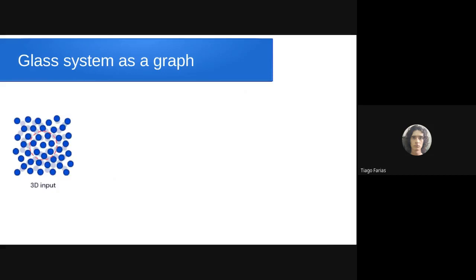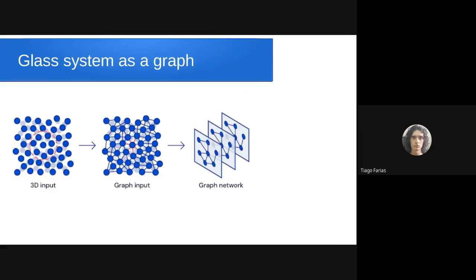So how do you transform a glass system into a graph? You take the 3D structure of the system you want to create a graph from, in this case a liquid and glass. You take the 3D input and transform it into a graph. In this case, the nodes correspond to the particles and the edges correspond to the connections between the particles. They connect the edges within a small range, so if a particle is within two distance units from the first one, they are connected. This graph serves as input to the graph neural network, and the neural network makes predictions for the mobility.